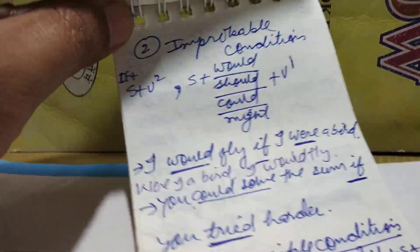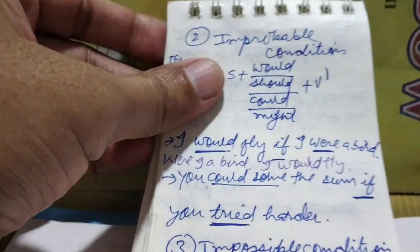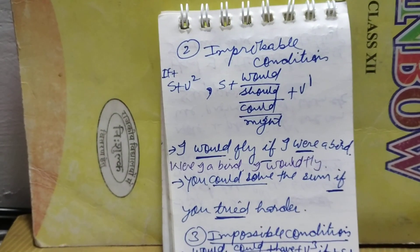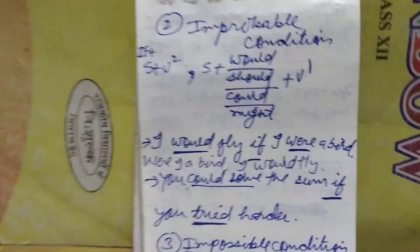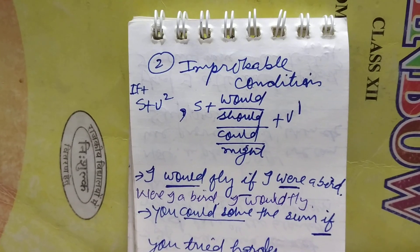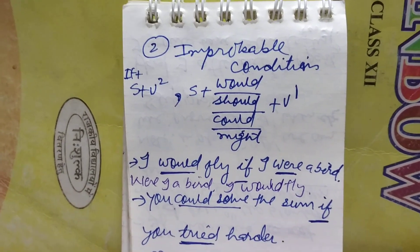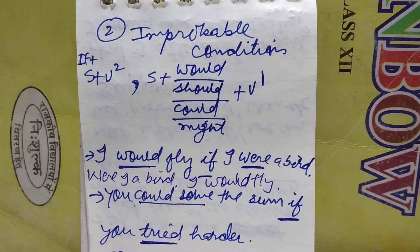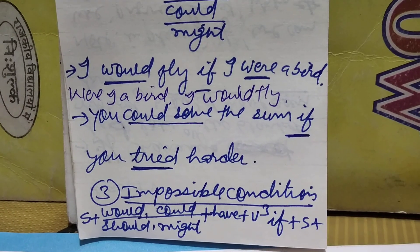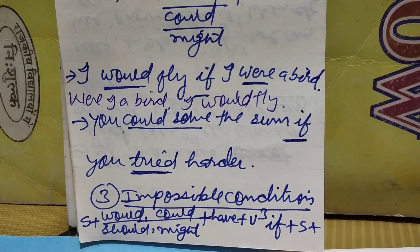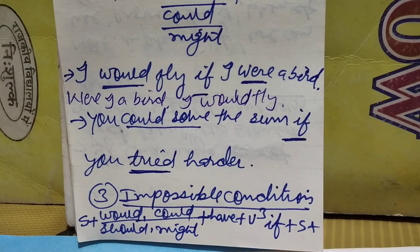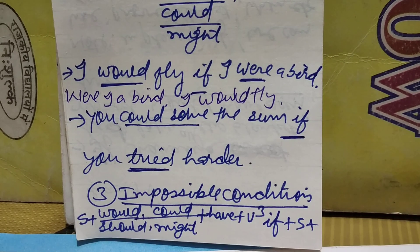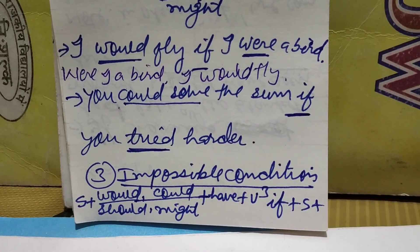Another example before you is of improbable condition. In improbable condition, the if-clause has subject plus V2 — that means past simple tense — and the principal clause has subject plus would/should/could/might plus V1. For example: I would fly if I were a bird; or, were I a bird, I would fly. In place of 'if', we can use 'were' also. Another example: you could solve the sum if you tried harder.